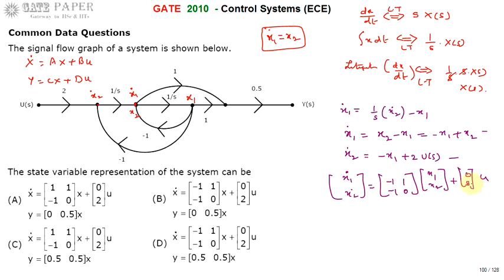Writing these in matrix form: x1_dot and x2_dot give matrix A = [[-1, 1], [-1, 0]] and matrix B = [[0], [2]]. This matches both option B and option D, so we cannot distinguish between them using the state equations alone. We must also evaluate the output equation y to find the correct answer.